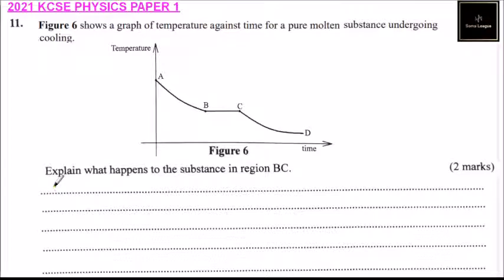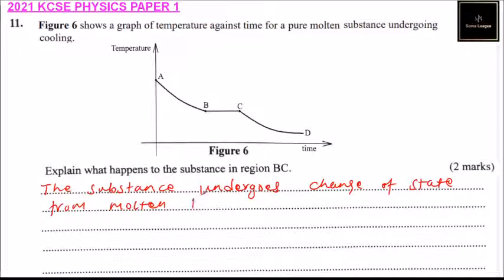At BC, the substance undergoes change of state from molten to solid without change in temperature.